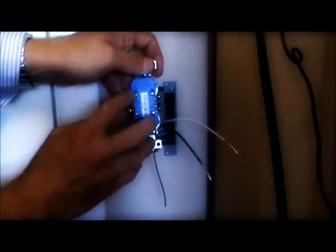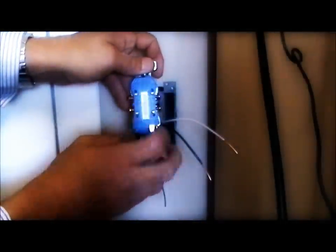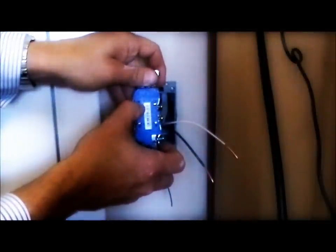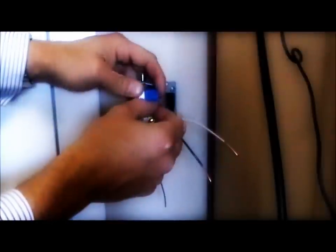Now, modern outlets have quick connects in the back. We, as a company, we do not use them. They have a tendency to get loose and they trip arc fault breakers. So what we do is we make the wires so they go around the screws, which is a much better and tighter connection.